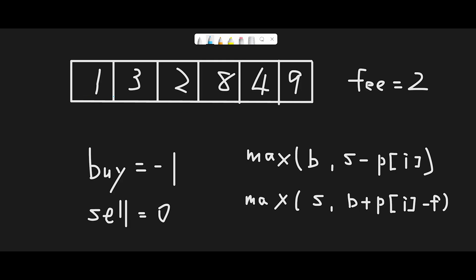Let me explain with this example: [1, 3, 2, 8, 4, 9] and fee = 2. To solve this question, the most important thing is knowing when to buy and when to sell the stock. Since we don't know when, every time we keep the max profit by buying the stock and by selling the stock.